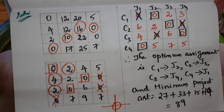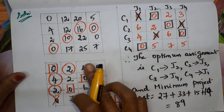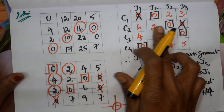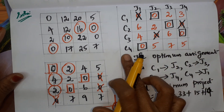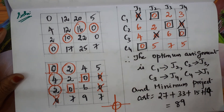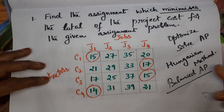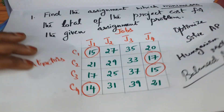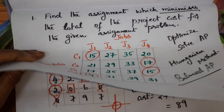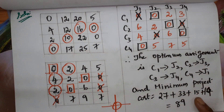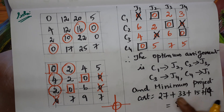Now we write the answer. We have assigned C1 to J2, C2 to J3, C3 to J4, and C4 to J1. Looking at the values from the original problem at those positions: 27, 33, 15, and 14. Summing these up gives the minimum project cost. The answer is 89.